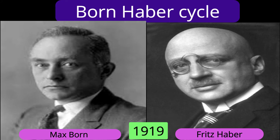In the indirect formation route, lattice energy appears. If we know the other values, we can find lattice energy, and vice versa — it is a simple algebraic equation. In 1919, Max Born and Fritz Haber gave us a method to determine lattice energy experimentally, which was previously very difficult to find. Numerical methods existed, but an experimental approach was lacking.